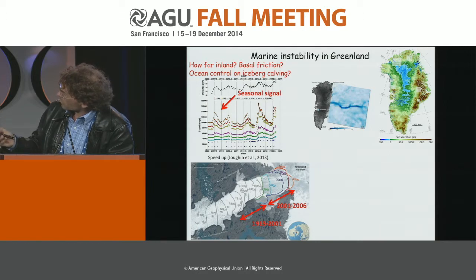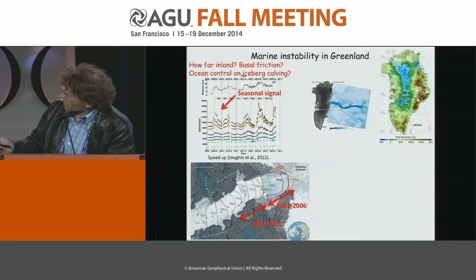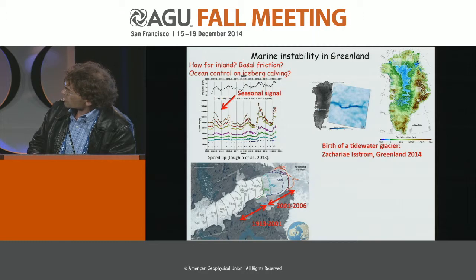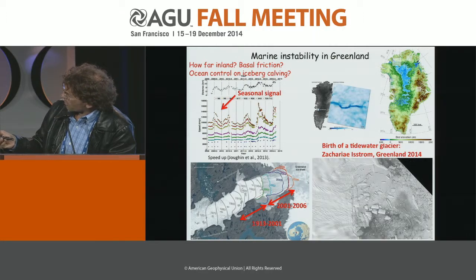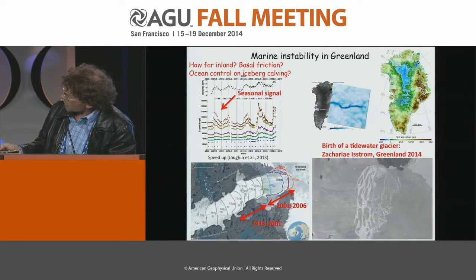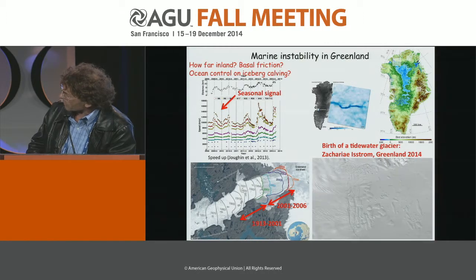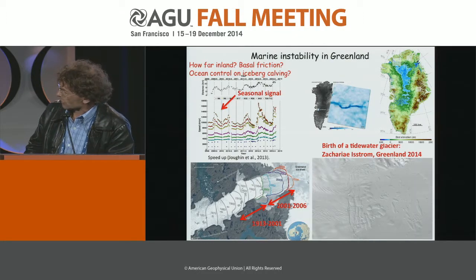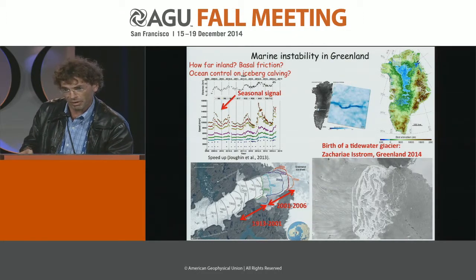With NISAR and the existing SAR satellites, we hope to look at very important processes taking place in the ice sheets. Marine instability is taking place at Jakobshavn, where the glacier retreated more in five years than in the past 50 years and is now speeding up, showing signs of seasonal fluctuations that did not exist before. Just as recently as this year, in the northeast of Greenland, we've seen the birth of a tidewater glacier. This glacier used to flow in an ice shelf and is now falling apart and calving into the ocean.